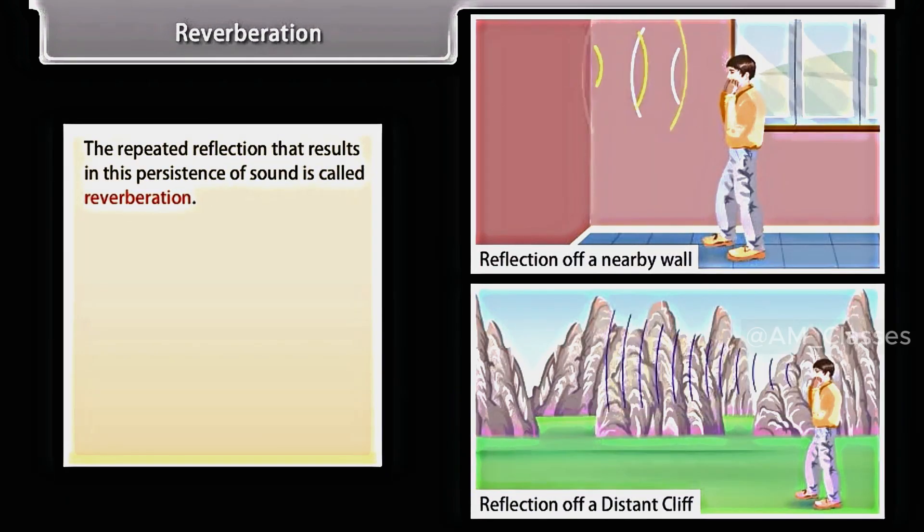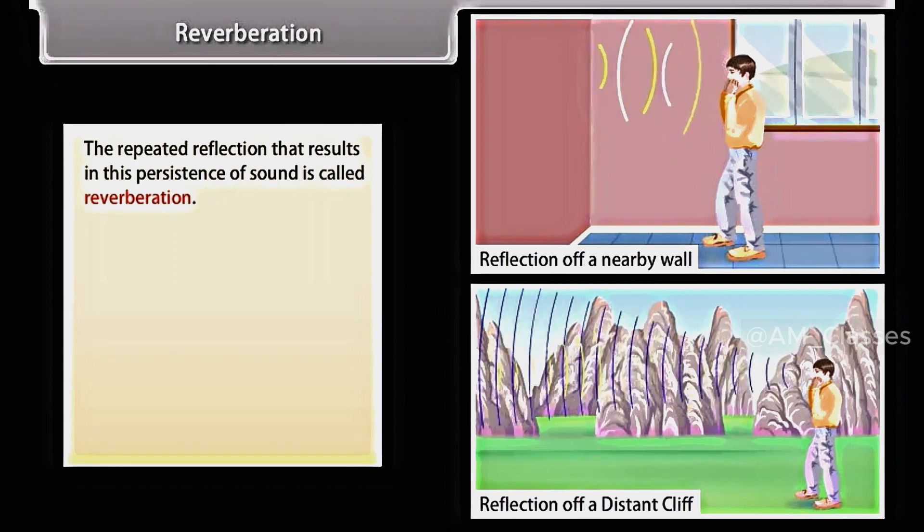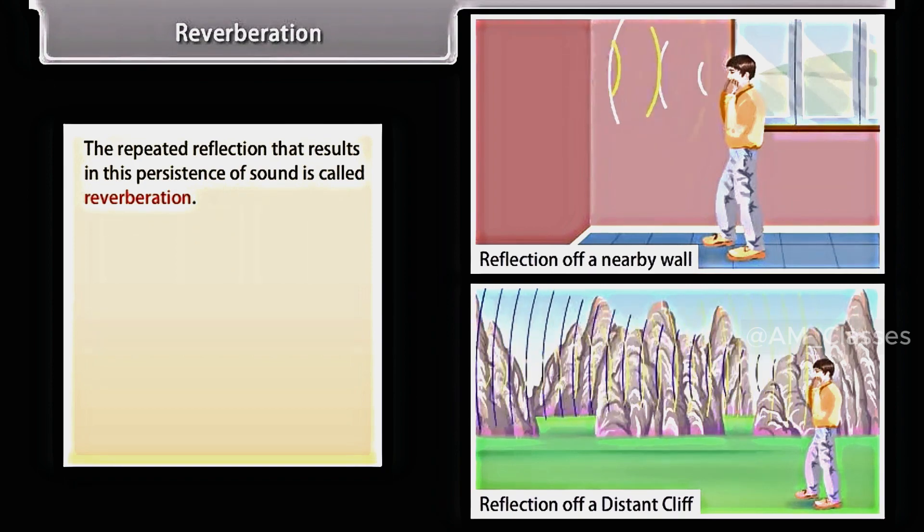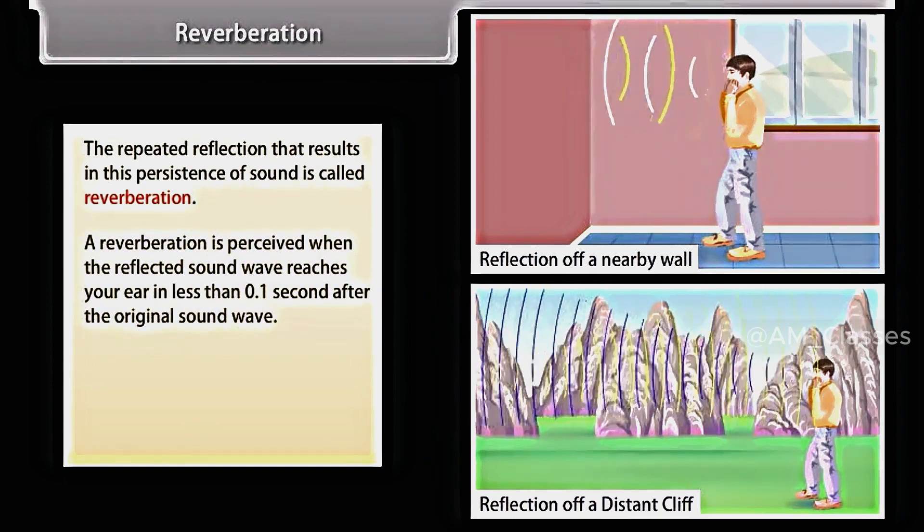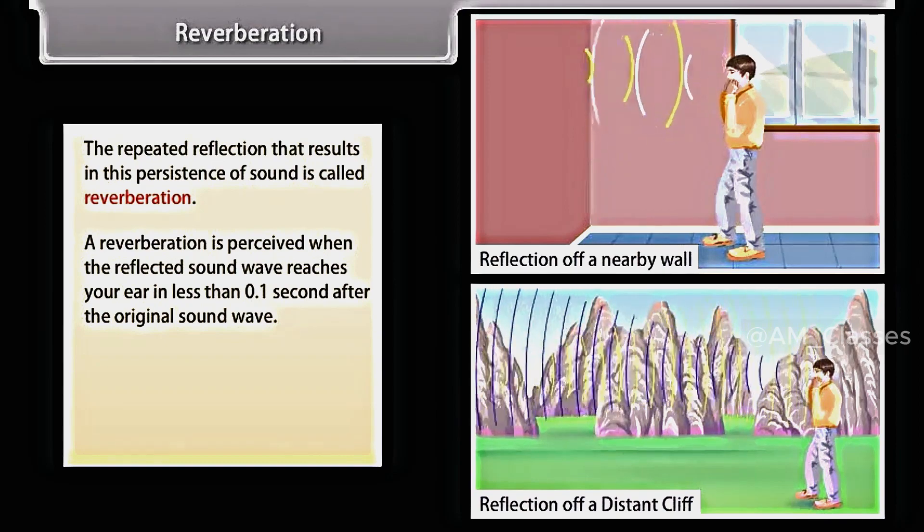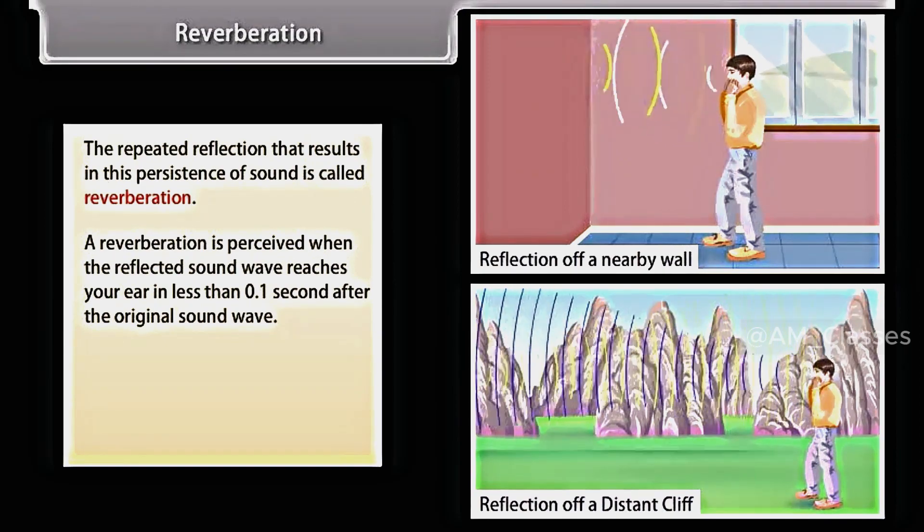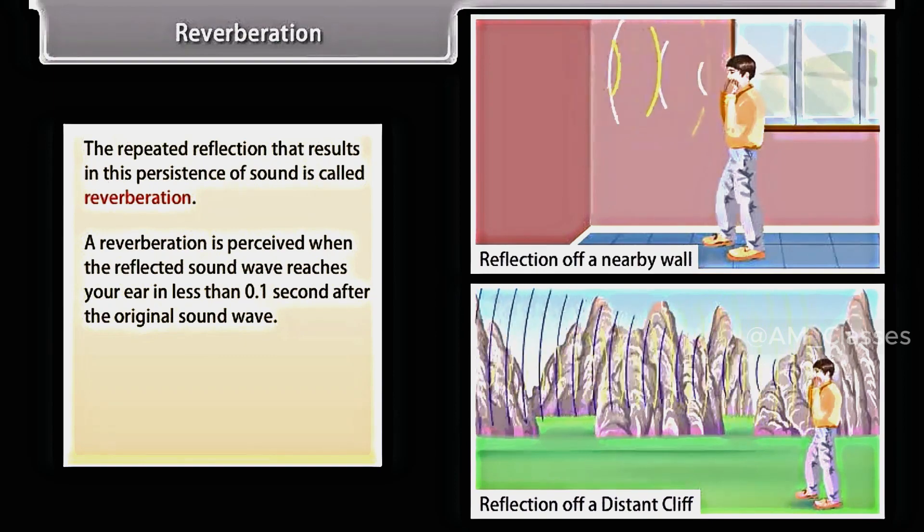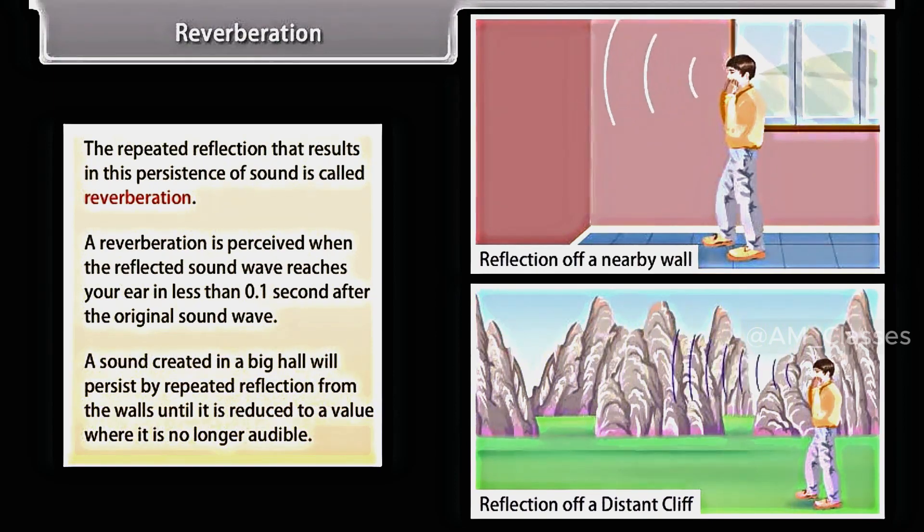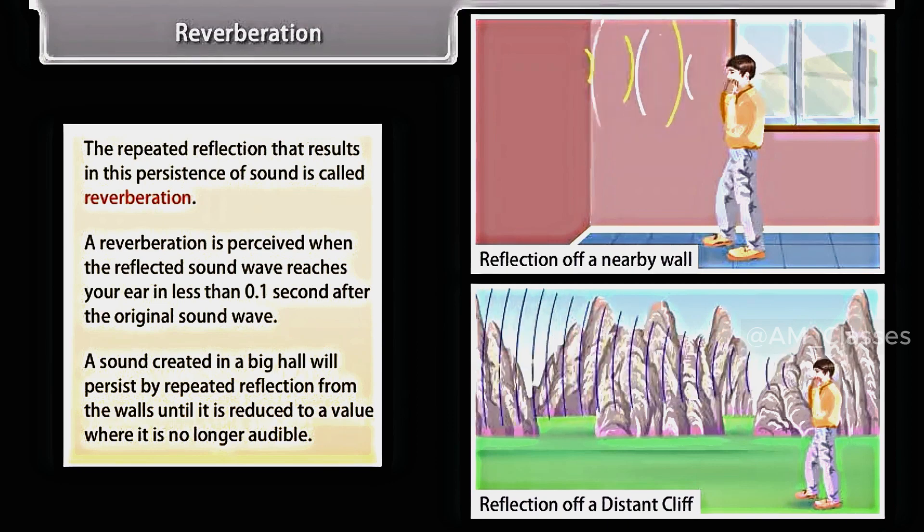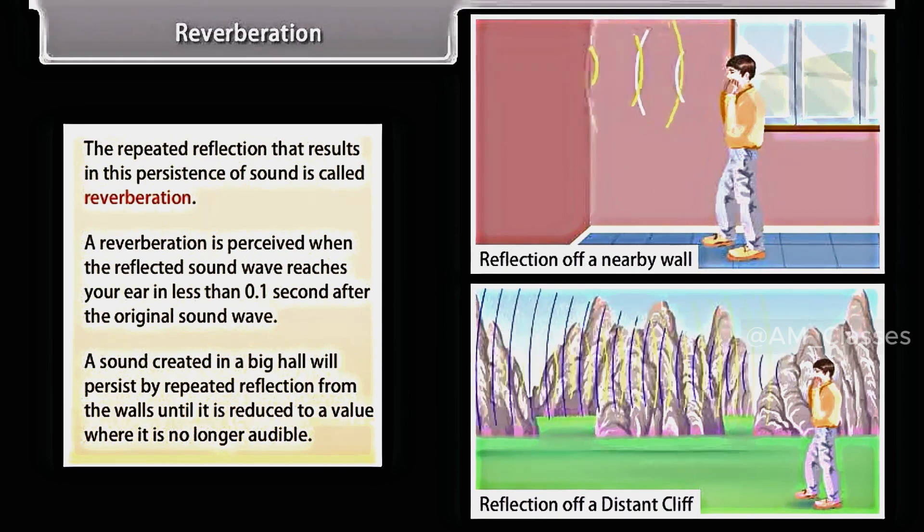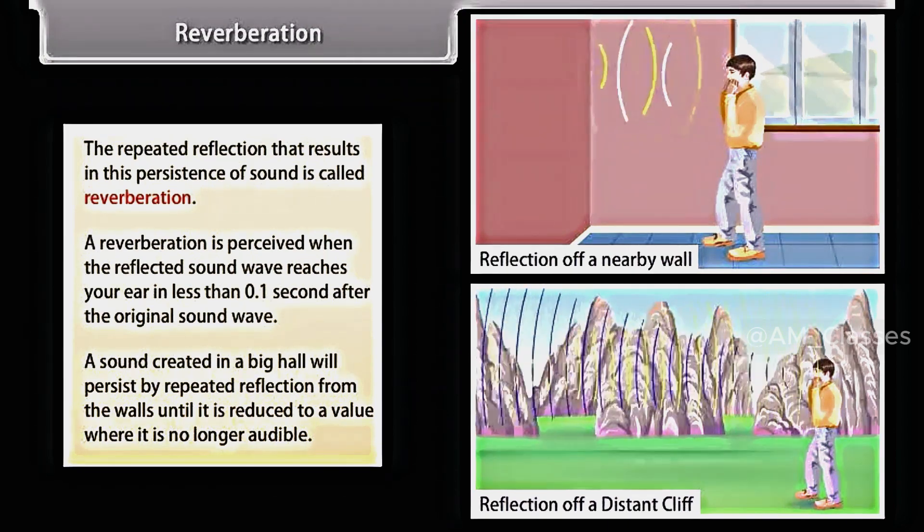Reverberation. The repeated reflection that results in this persistence of sound is called reverberation. A reverberation is perceived when the reflected sound wave reaches your ear in less than 0.1 second after the original sound wave. For example, a sound created in a big hall will persist by repeated reflection from the walls until it is reduced to a value where it is no longer audible.